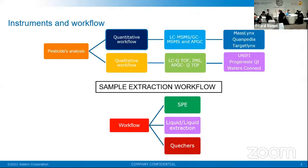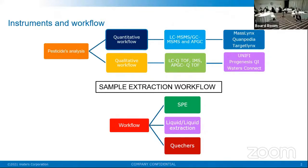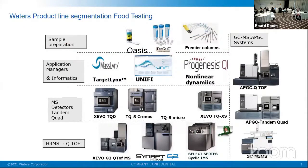If you look at the extraction process, you have different matrices in the market. In the case of vegetables and food products you are going to consume, we need to see whether pesticides are present or absent. What kind of extraction protocols do you need to follow? There are many protocols like solid-phase extraction, liquid-liquid extraction, and QuEChERS. There are many instruments involved, and a lot of software which essentially supports doing this analysis.